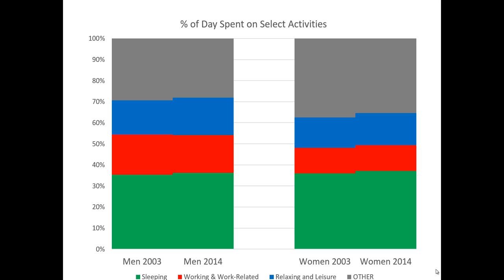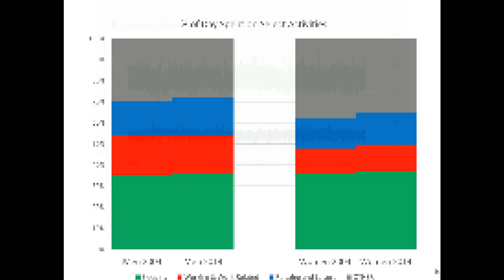Given that both men and women are spending a little more time sleeping and have a little more time for relaxing and leisure activities, we may be tempted to conclude that people are happier. However, the purpose of this original study was merely to document exactly how people's time was spent, not to assess how happy they were. Thus, if the purpose of our current research is to find out how happy people are now compared to the past, this study may not be serving us as closely as we would hope.